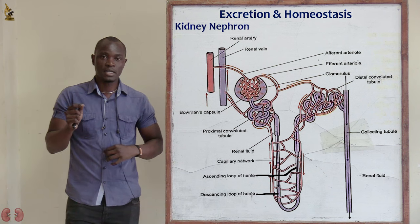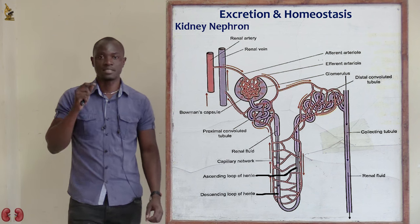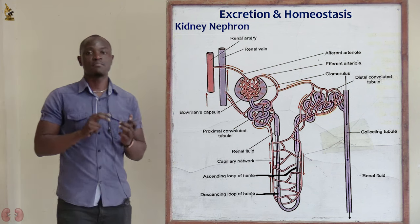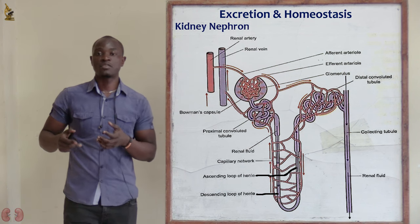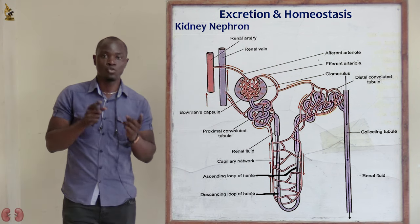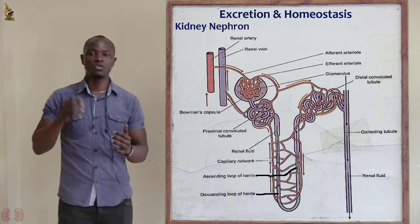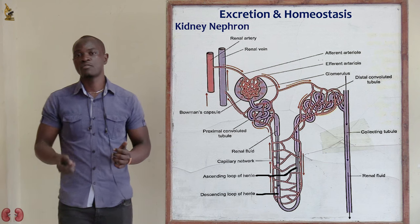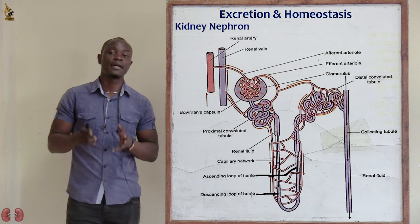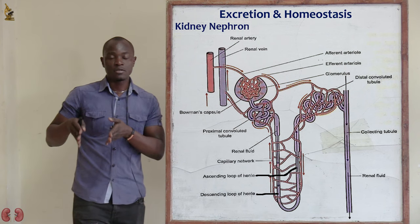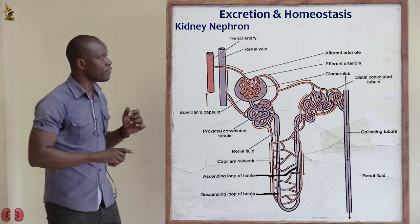Remember, in each kidney there are about 1.25 million nephrons. The nephron is mainly divided into two parts. The first part is referred to as the renal tube, which mainly comprises the Bowman's capsule, proximal convoluted tube, loop of Henle, distal convoluted tube, etc. The second part is the glomerulus. Those are the main parts of the nephron — the renal tubes and the glomerulus.